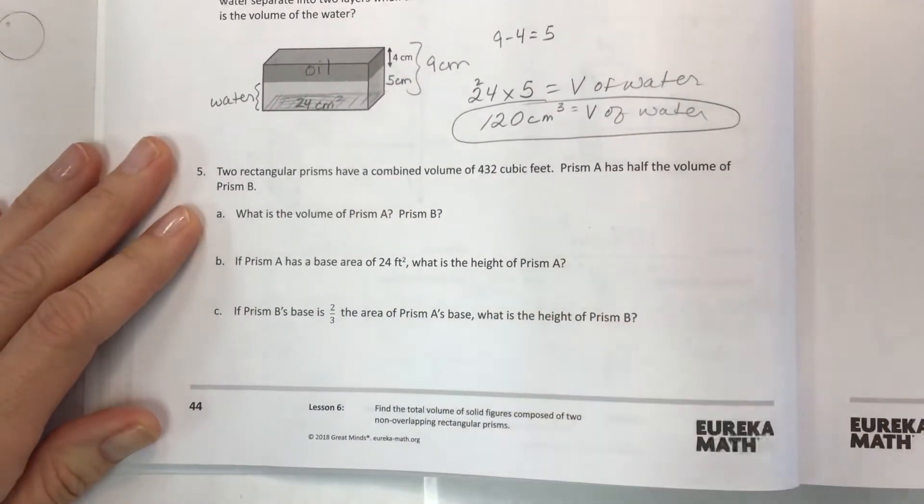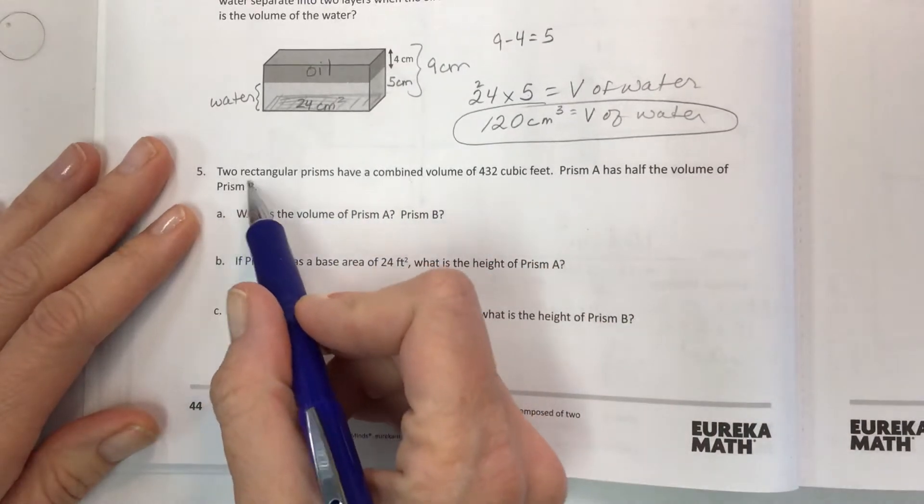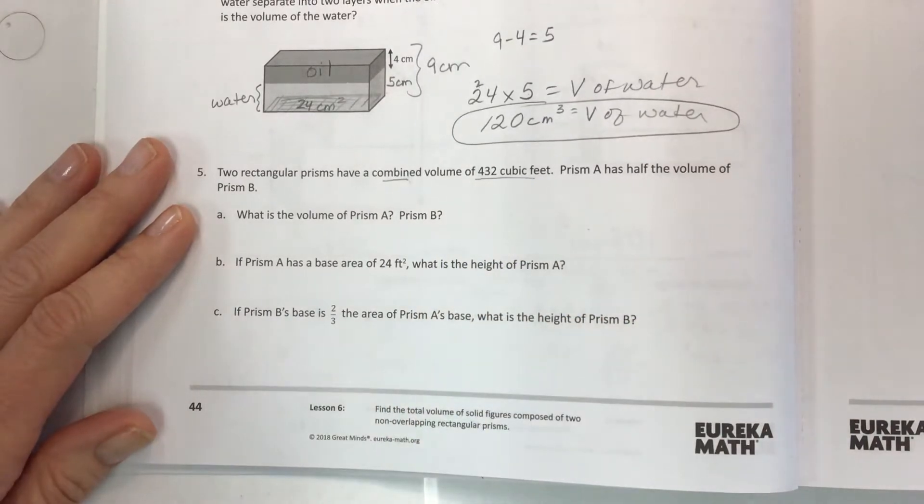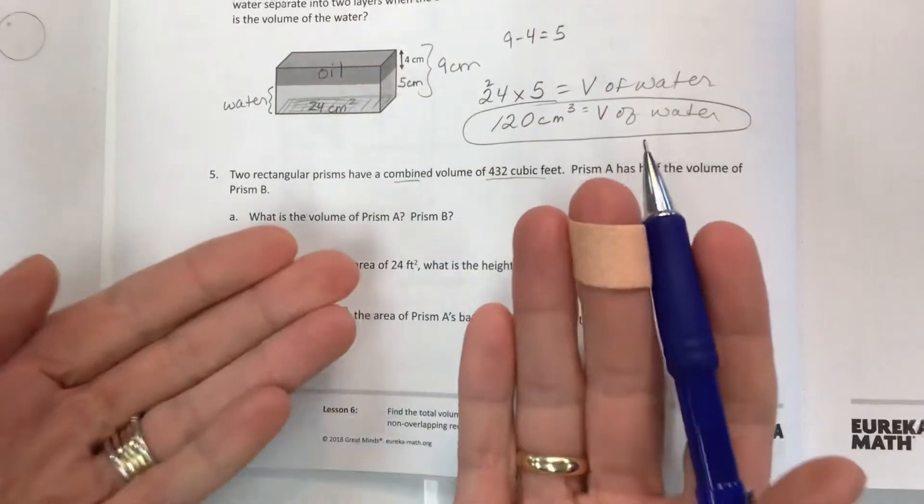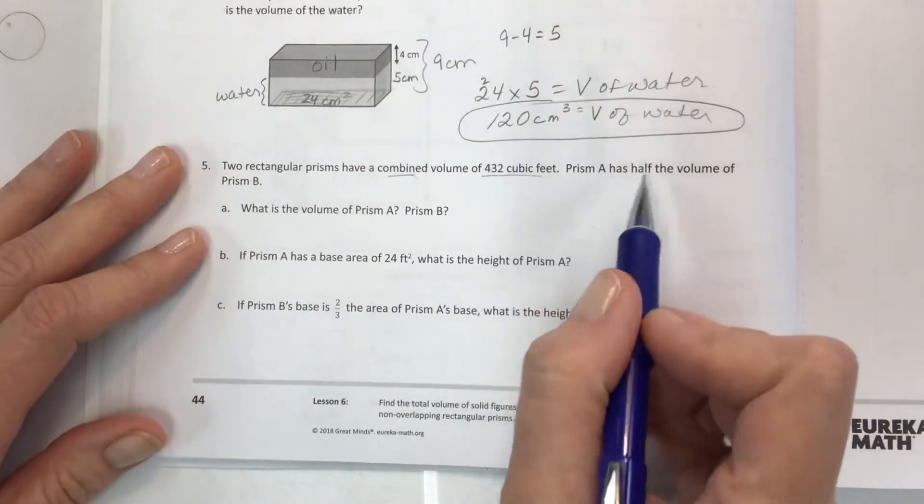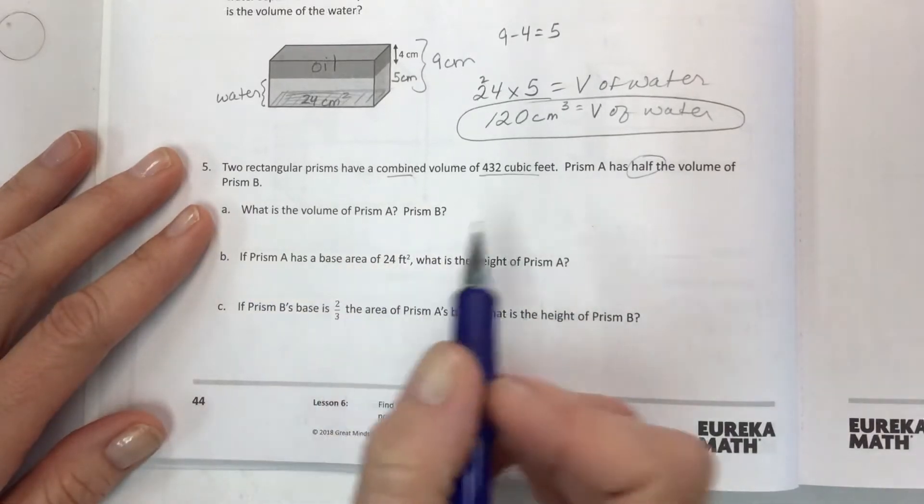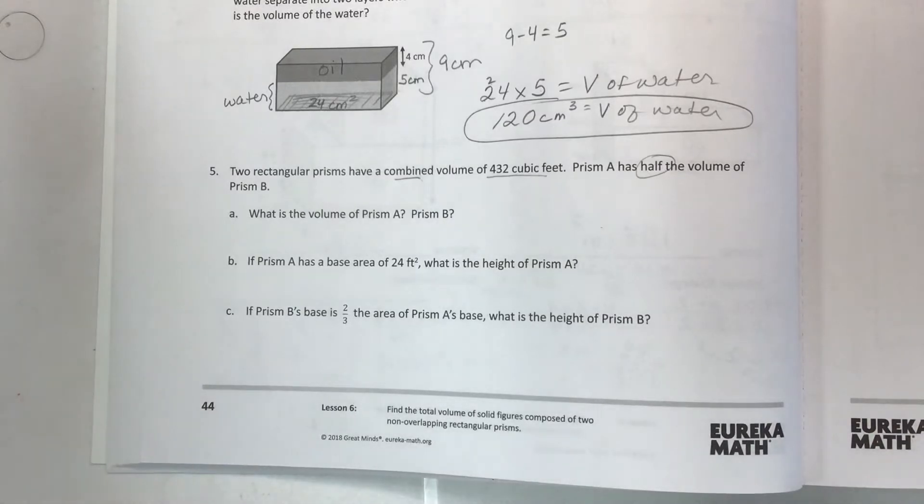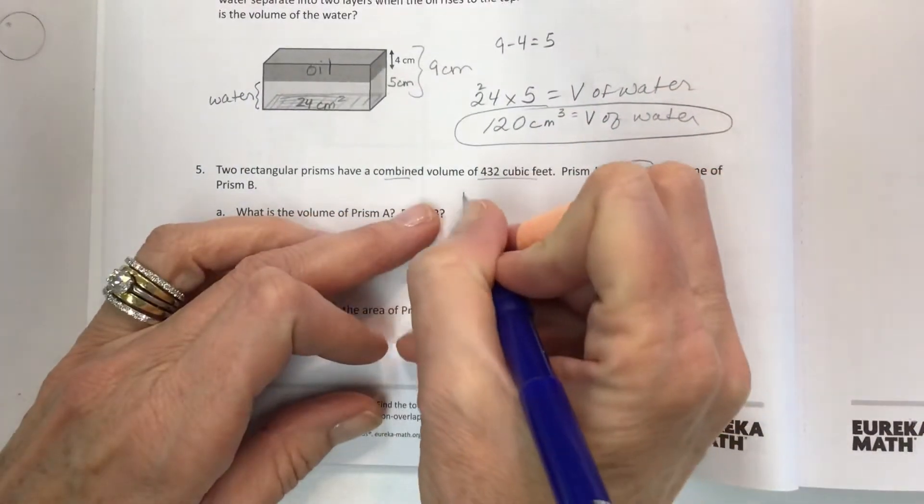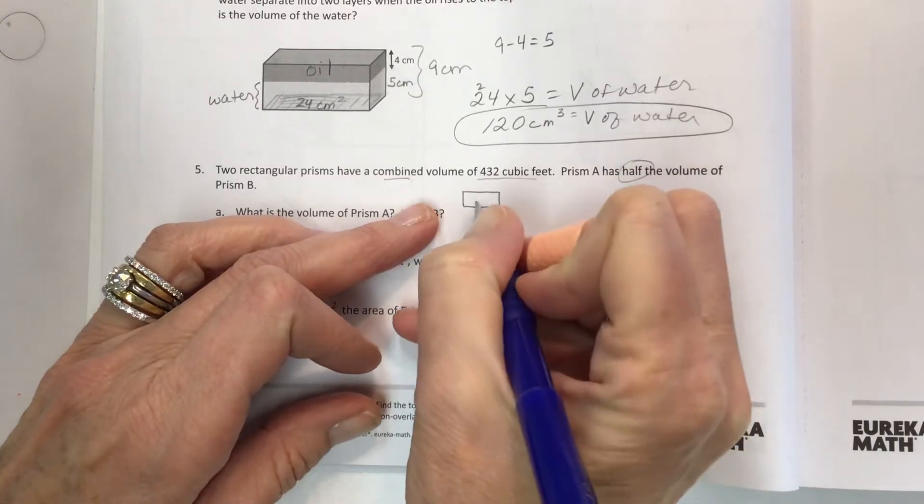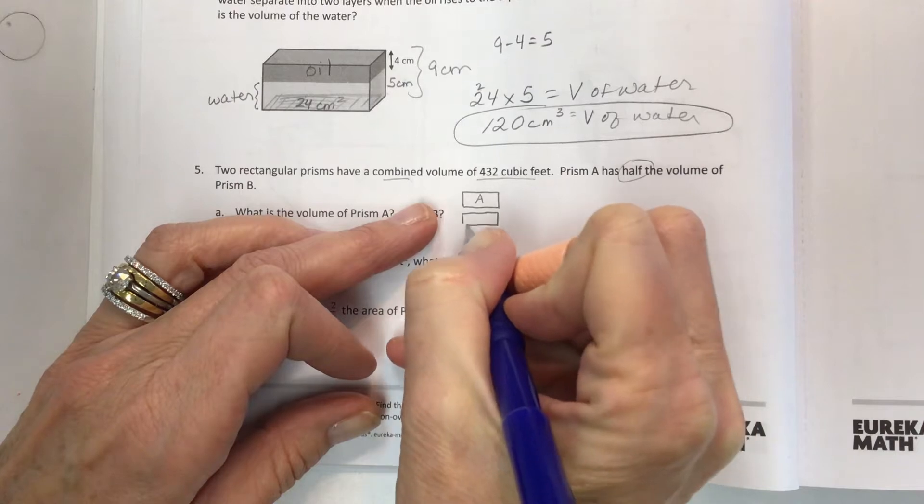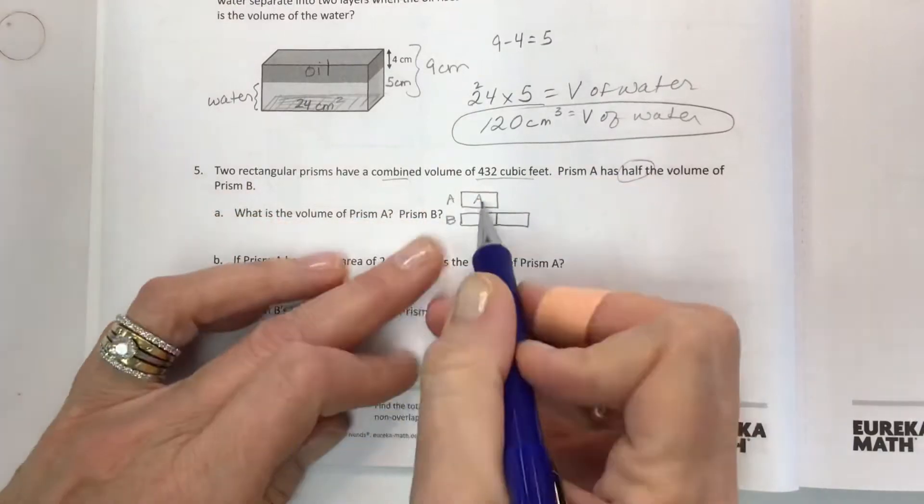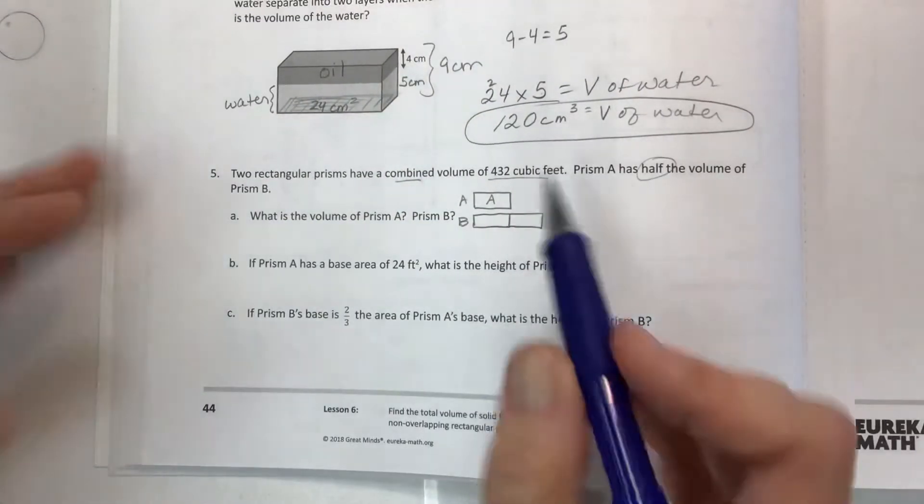It says two rectangular prisms have a combined volume of 432 cubic feet. So when you add both of them up you get 432, but prism A has half the volume of prism B. Now a nice way of thinking about this is that B is twice what A is, and so it's handy to use a tape diagram and to say well if this is A then B would be twice that.